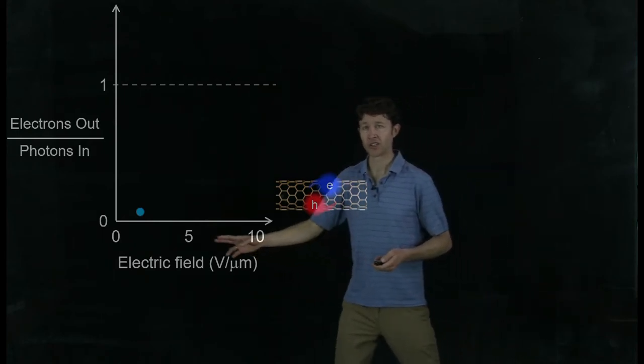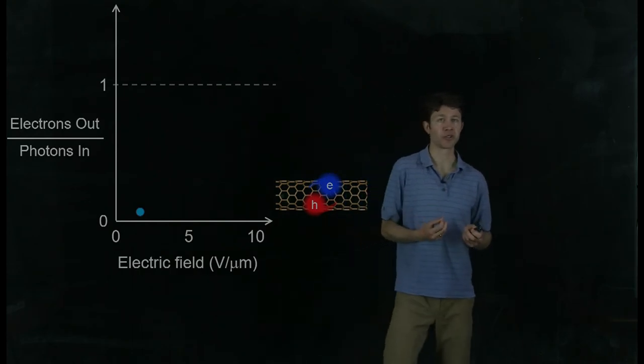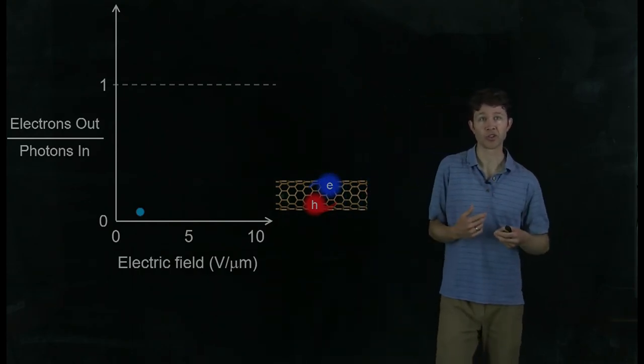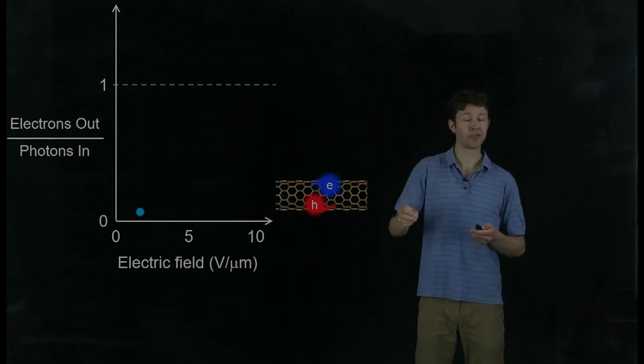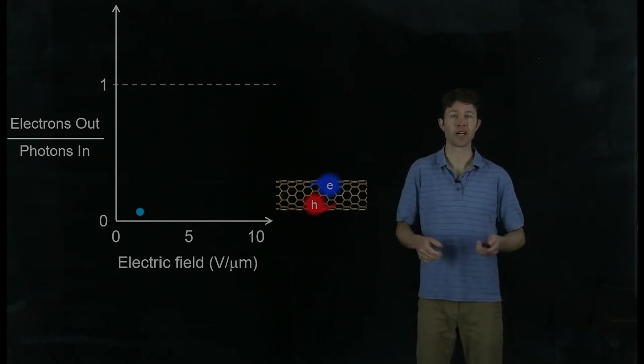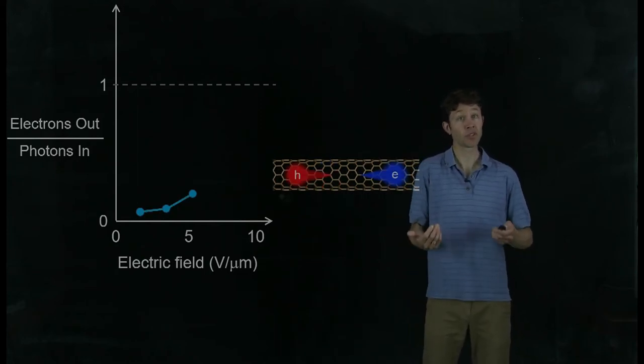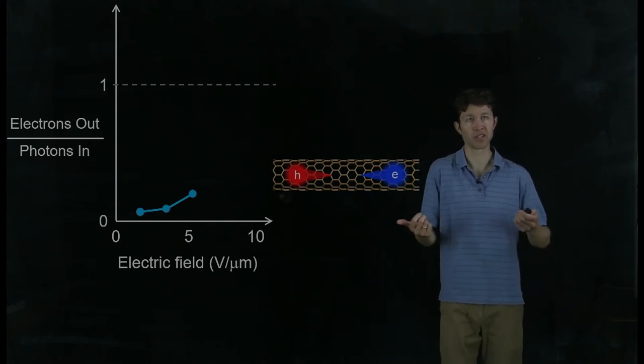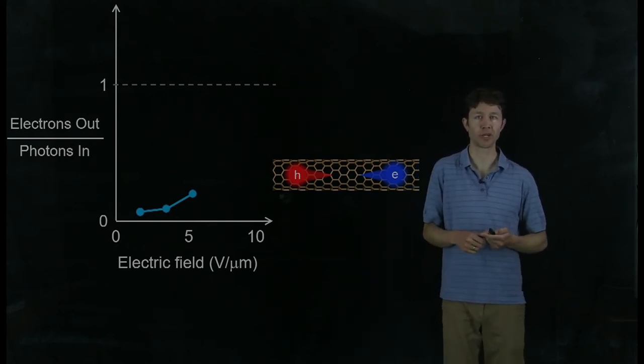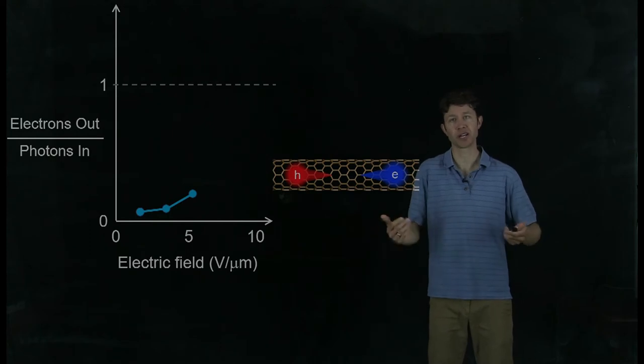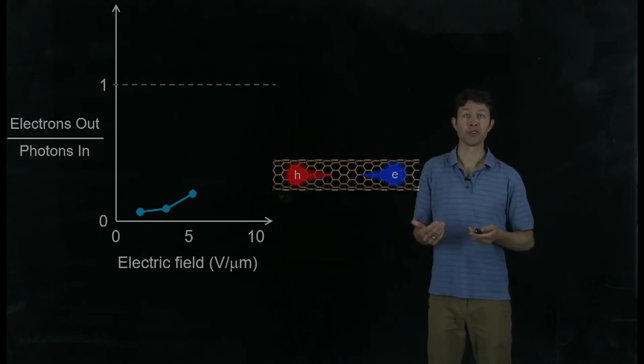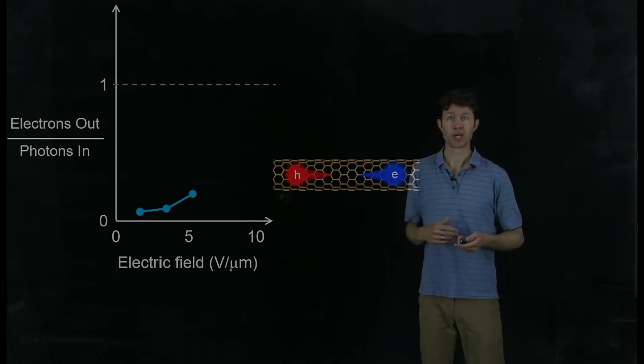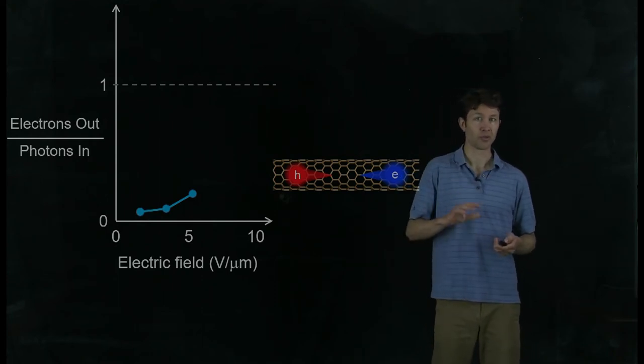The first blue dot is showing some of our first data at low electric fields, where a lot of the electrons and holes are getting stuck to each other and not even coming out of the device. It takes 20 photons in to get one electron out of the device. As we went to higher fields, we started seeing evidence that some of the electrons and holes were being pulled apart from each other. So we're getting more electrons out for every handful of photons that are being absorbed. But it's still a lot less than one electron per photon.